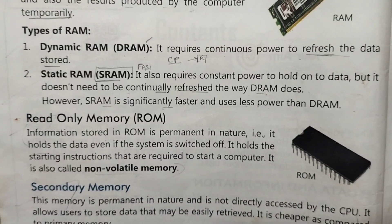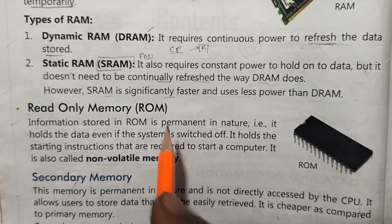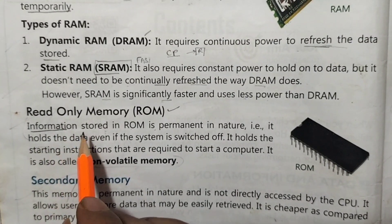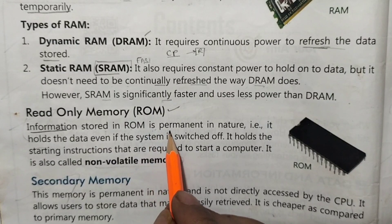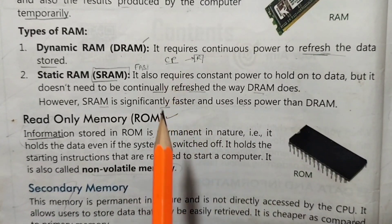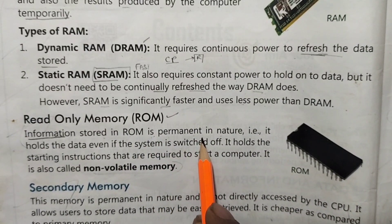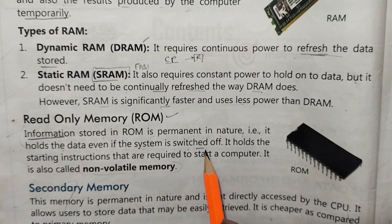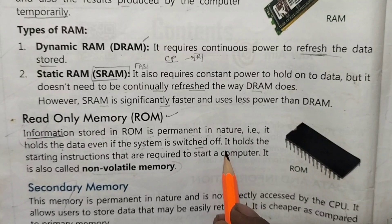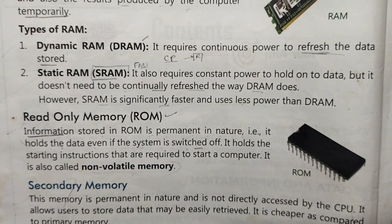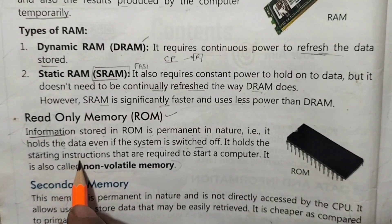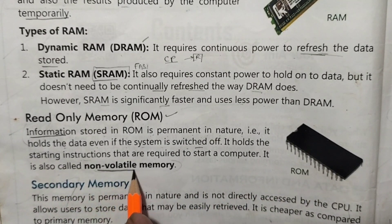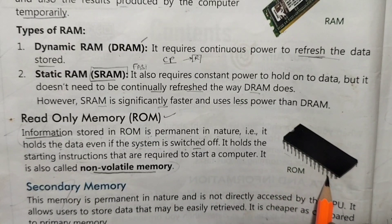Now let's talk about ROM — Read Only Memory. The information stored in ROM is permanent in nature. It holds the data even if the system is switched off, unlike RAM which is temporary. It holds the starting instructions required to start a computer. That is why it is also called non-volatile memory.